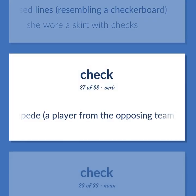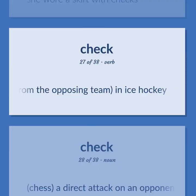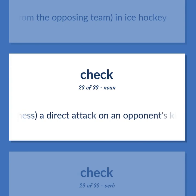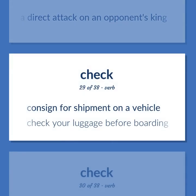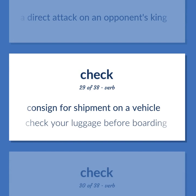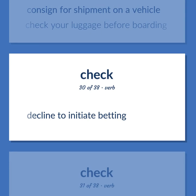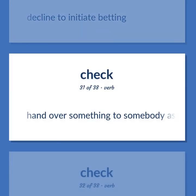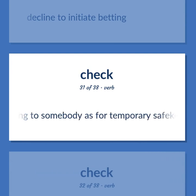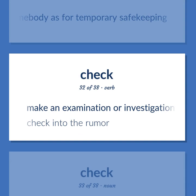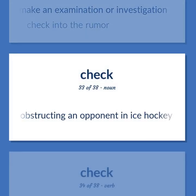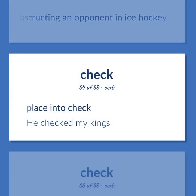CHECK: Block or impede a player from the opposing team in ice hockey. Chess: a direct attack on an opponent's king. Consign for shipment on a vehicle — check your luggage before boarding. Decline to initiate betting. Hand over something to somebody as for temporary safekeeping. Make an examination or investigation — check into the rumor. Obstructing an opponent in ice hockey. Place into check — he checked my king.